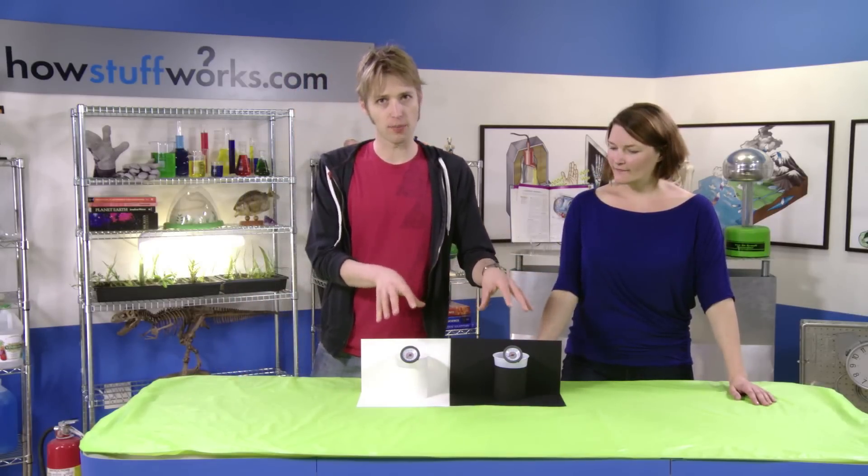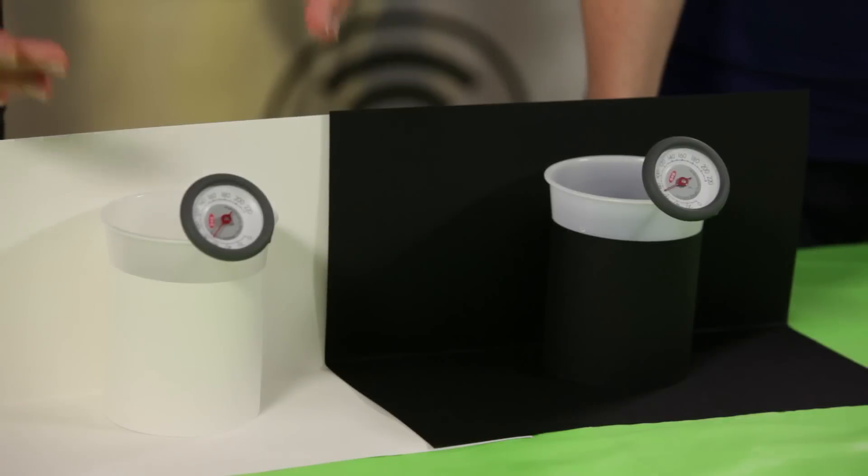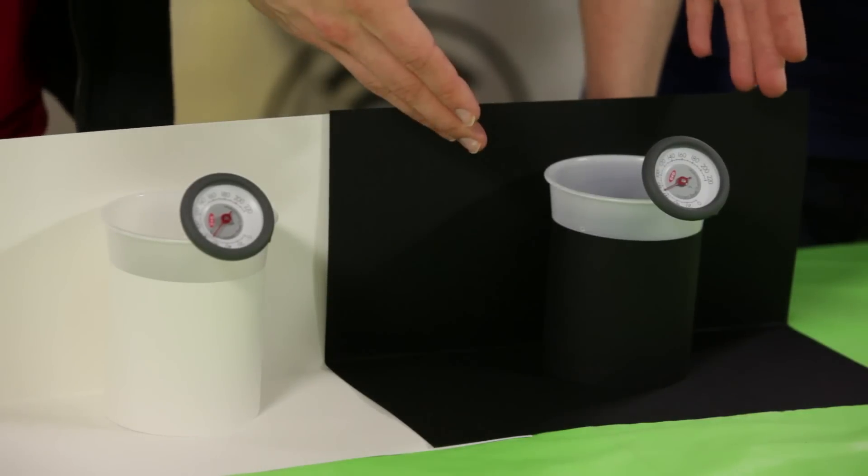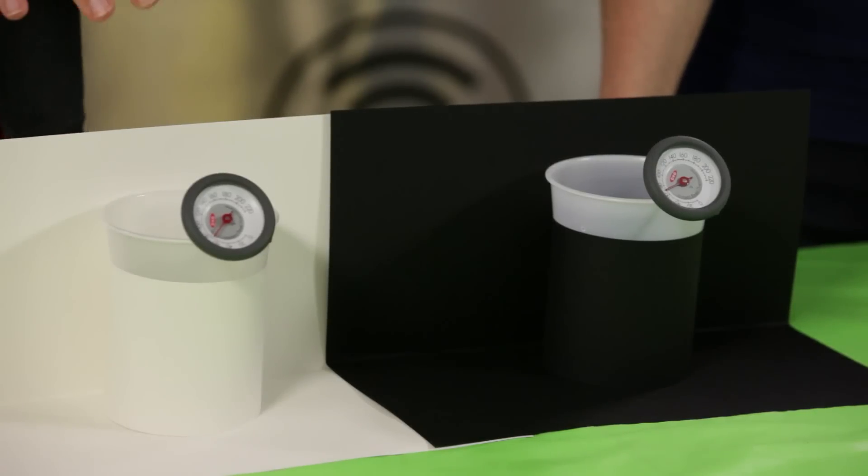For this, you're going to need two identical cups or glasses. Wrap one in white cardboard, the other in dark cardboard. Then put some water into each glass and set them out in the sun for a couple of hours.